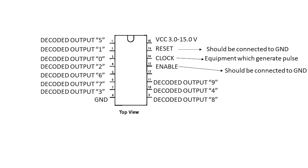Next, we have the enable pin. The enable should be connected to the ground for the IC to work. Next, we have the carryout. When all pins go from number zero to number nine, the carryout will turn on once. So the ratio of the full cycle to this pin is 10.